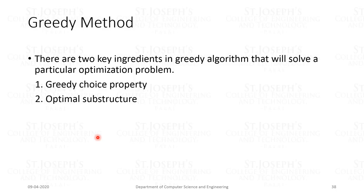The second ingredient of the greedy algorithm is the optimal substructure. A problem is said to have an optimal substructure if an optimal solution can be constructed efficiently from the optimal solutions to its sub-problems.